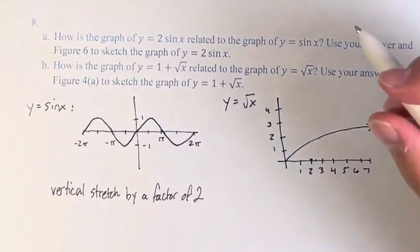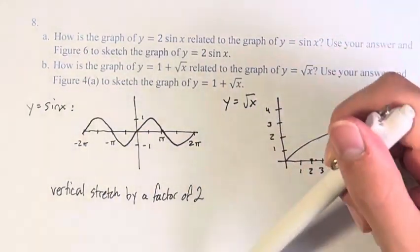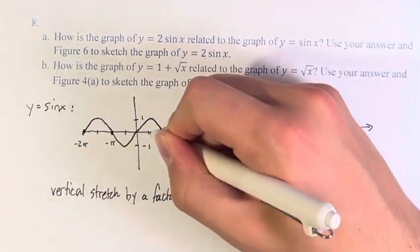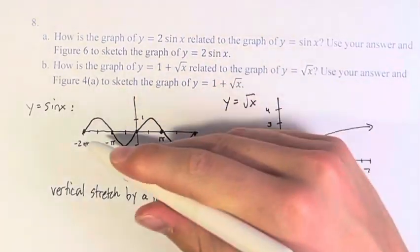I think the easiest way to do this is to remember that multiplying 0 by 2 is just 0, so these points here, which were all 0s of the original function, are going to stay at 0 for the new function.